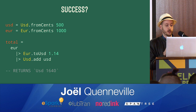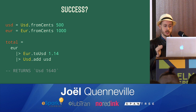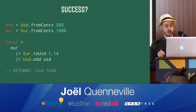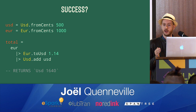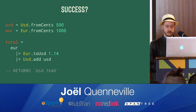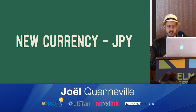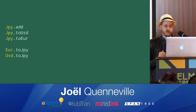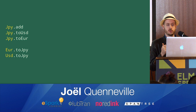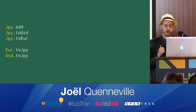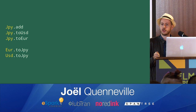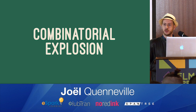So problem solved, right? Well, not quite. Because now we introduce a new currency — we want to handle yen. Now we have to create a custom module for yen that has a function to add yen to yen, but also to convert to US dollars and convert to euros. While we're at it, euros should be able to convert to yen and also US dollars to yen. And now we're back to combinatorial explosion.